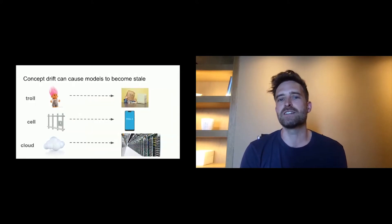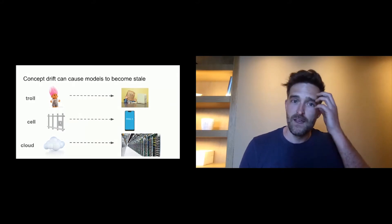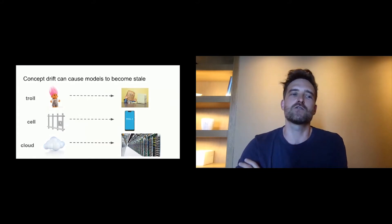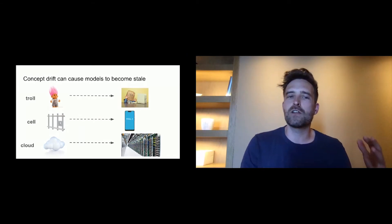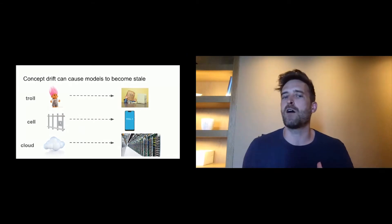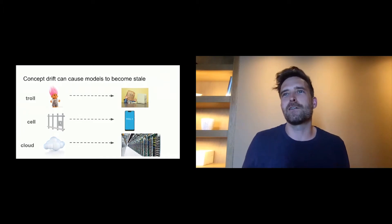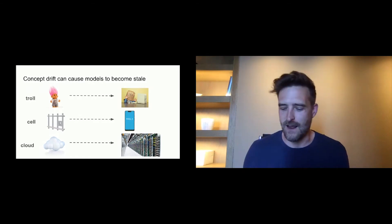Another example of concept drift is in text, where the way we use words changes over time. The meanings of words like troll, cell, and cloud have evolved to have digital meanings. A troll doesn't necessarily live under a bridge — it could be behind a computer. A cell can refer to a mobile phone. And cloud, especially with this audience, you're thinking more like a data center.